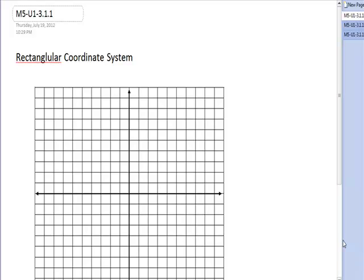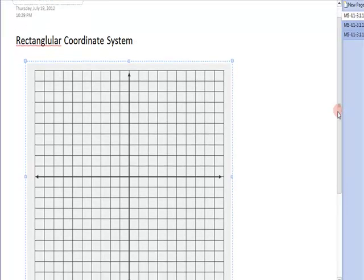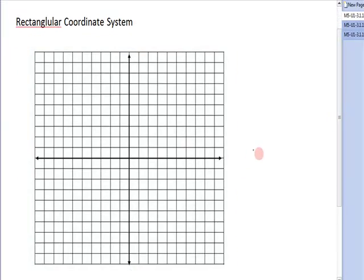This video is going to be about the rectangular coordinate system. Sometimes it's called the Cartesian coordinate plane. The rectangular coordinate system is actually a plane. It is made up of a horizontal number line, which is called the x-axis, and a vertical number line, which is called the y-axis.